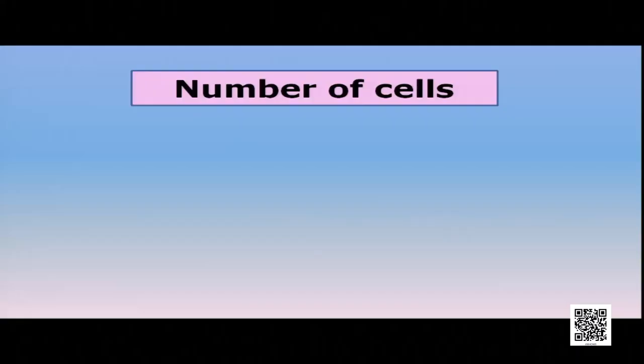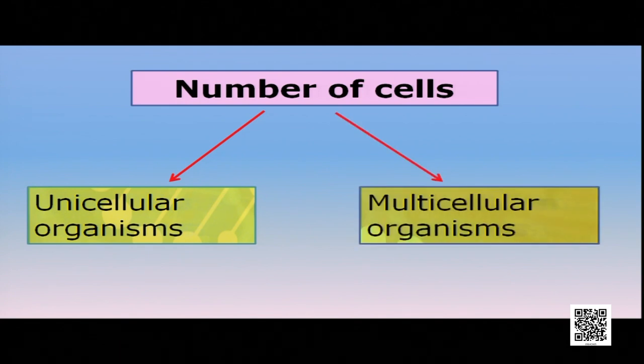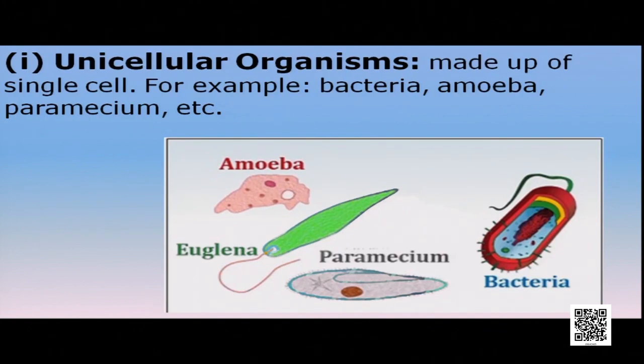Now, regarding the number of cells: even one cell can form one complete organism. Based on this, there are two basic types of organisms — unicellular organisms and multicellular organisms. Unicellular organisms have just one cell, and that single cell carries out all the basic functions of the organism.